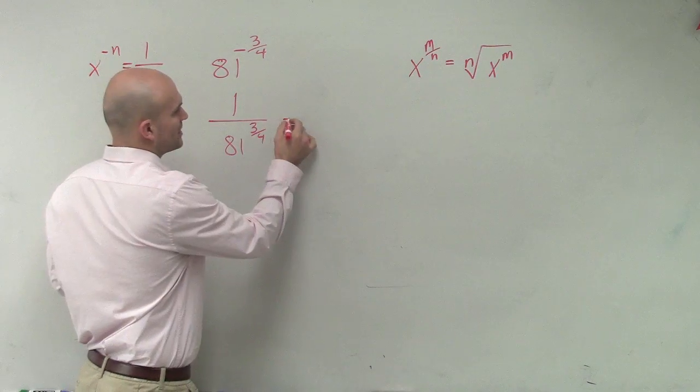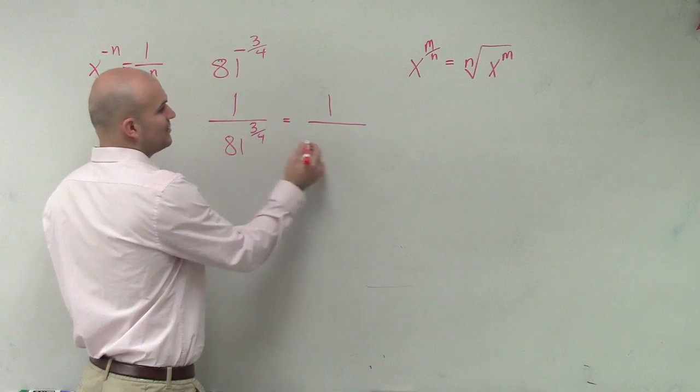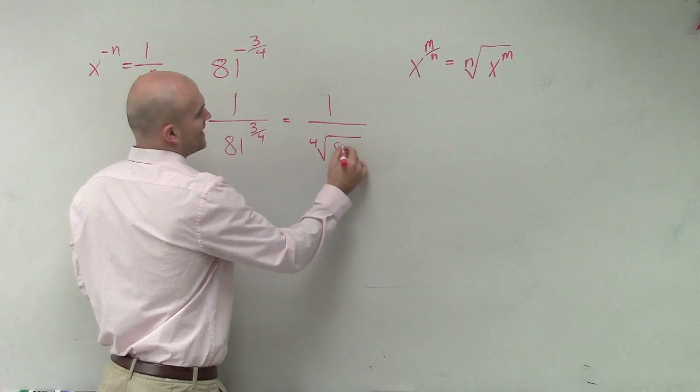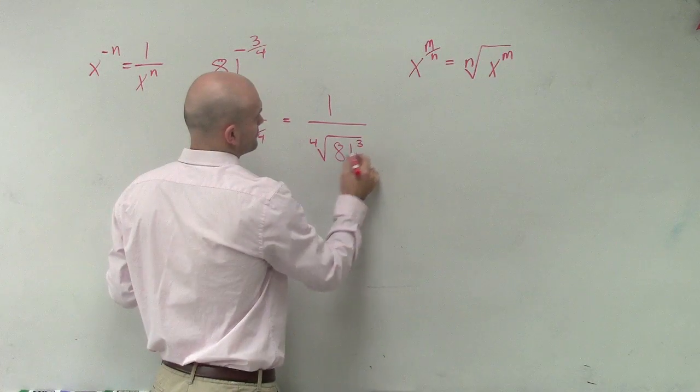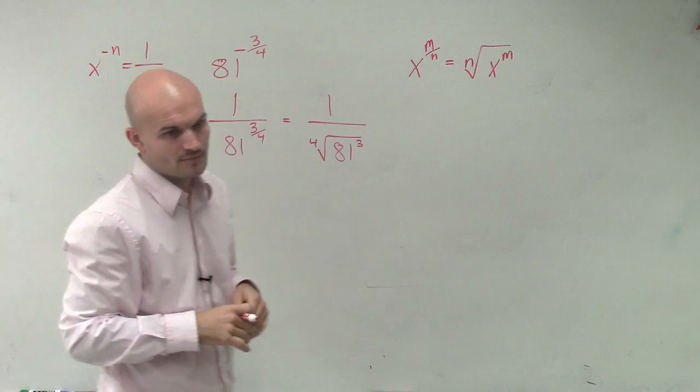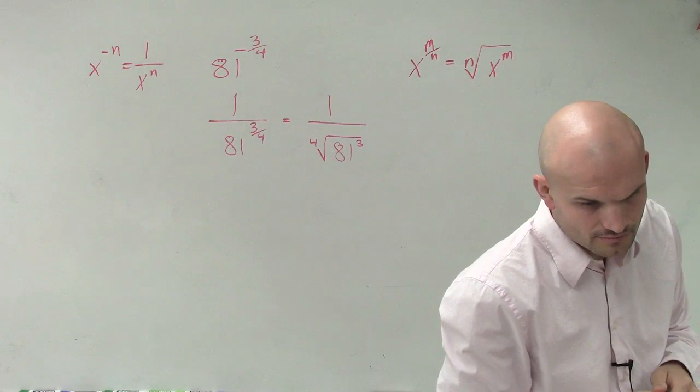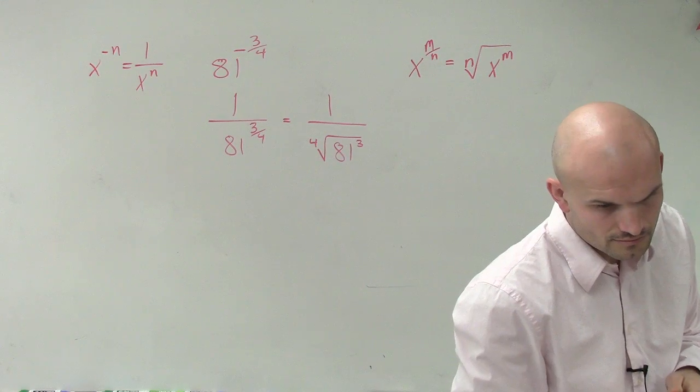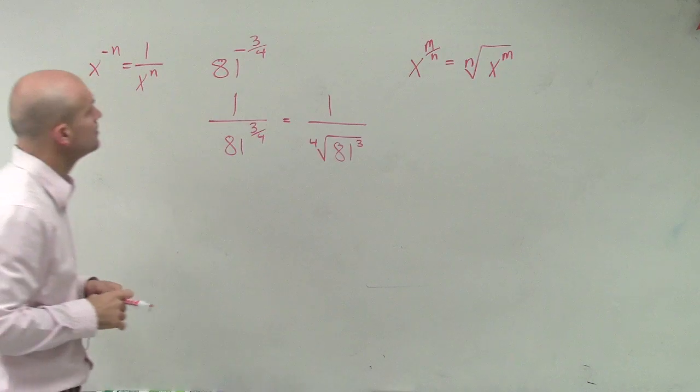So therefore, we can write this as now 1 over the fourth root of 81 cubed. All right. Do you solve this stuff, or just throw it out there? Do you solve that, or just throw it out there?